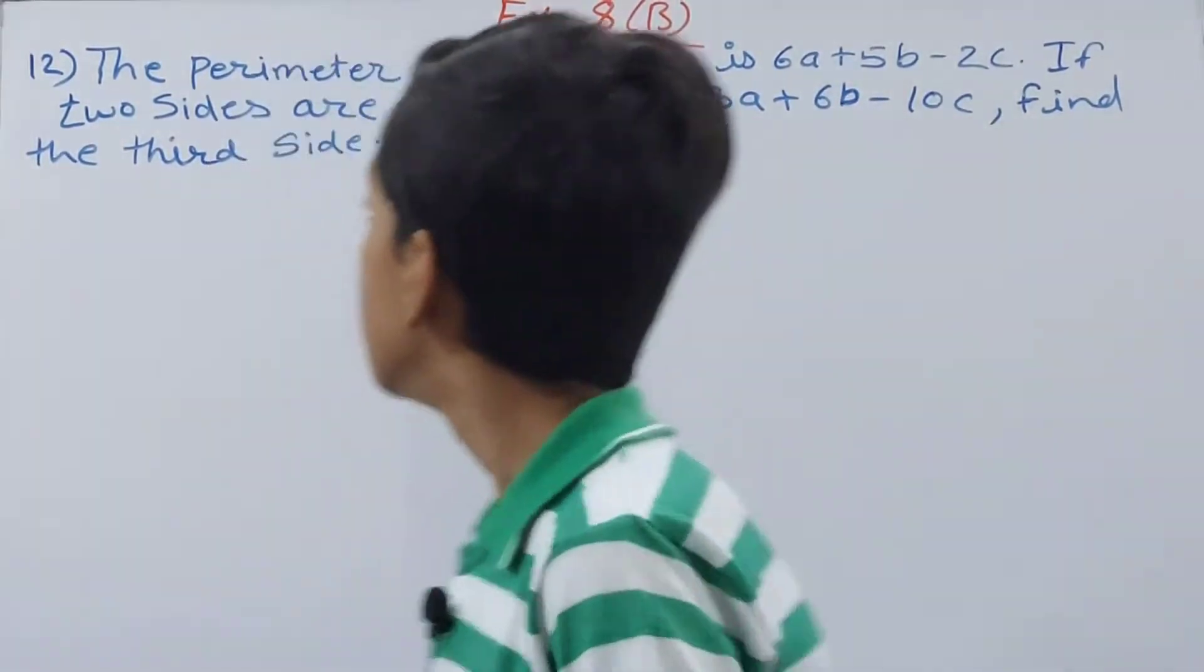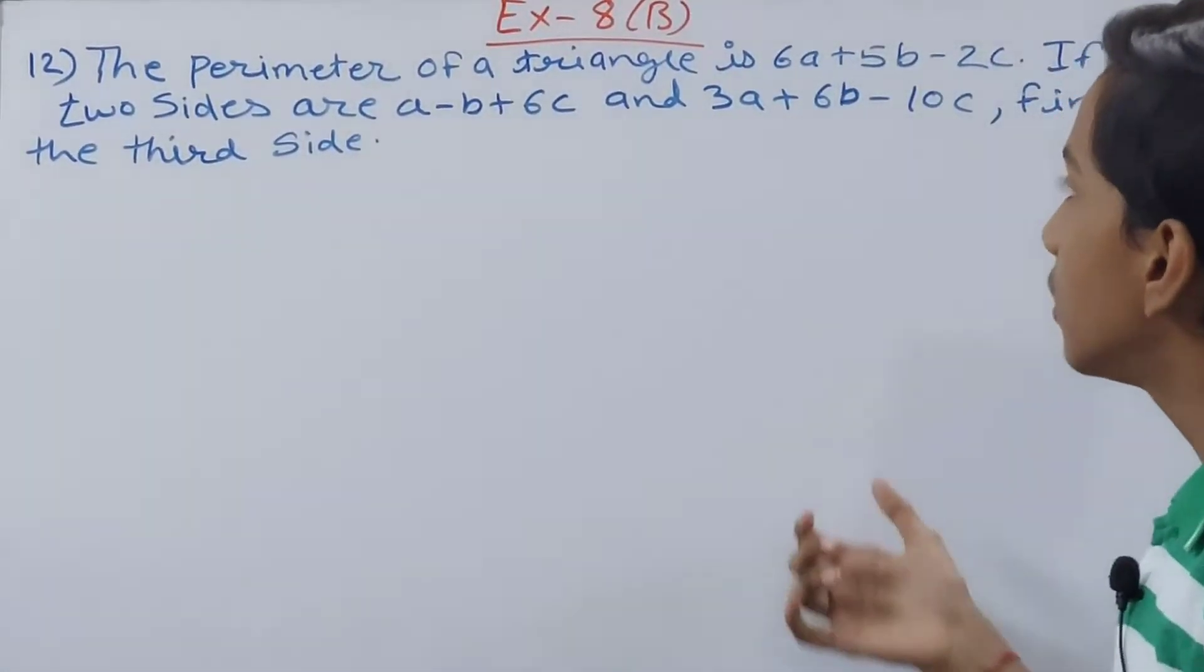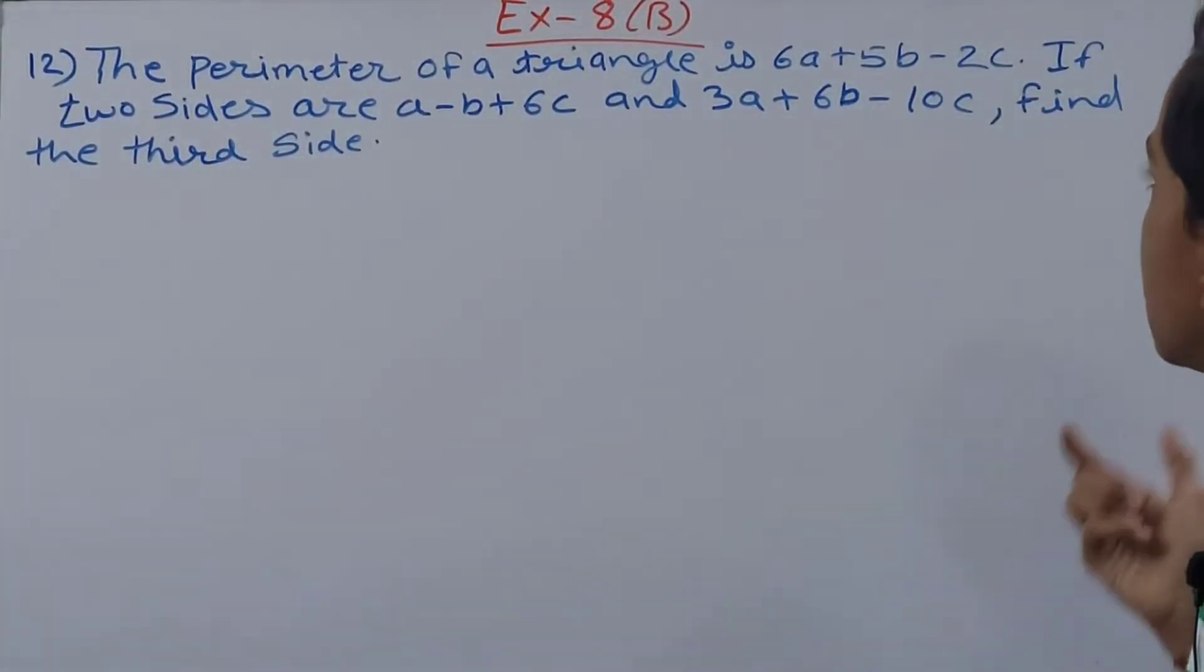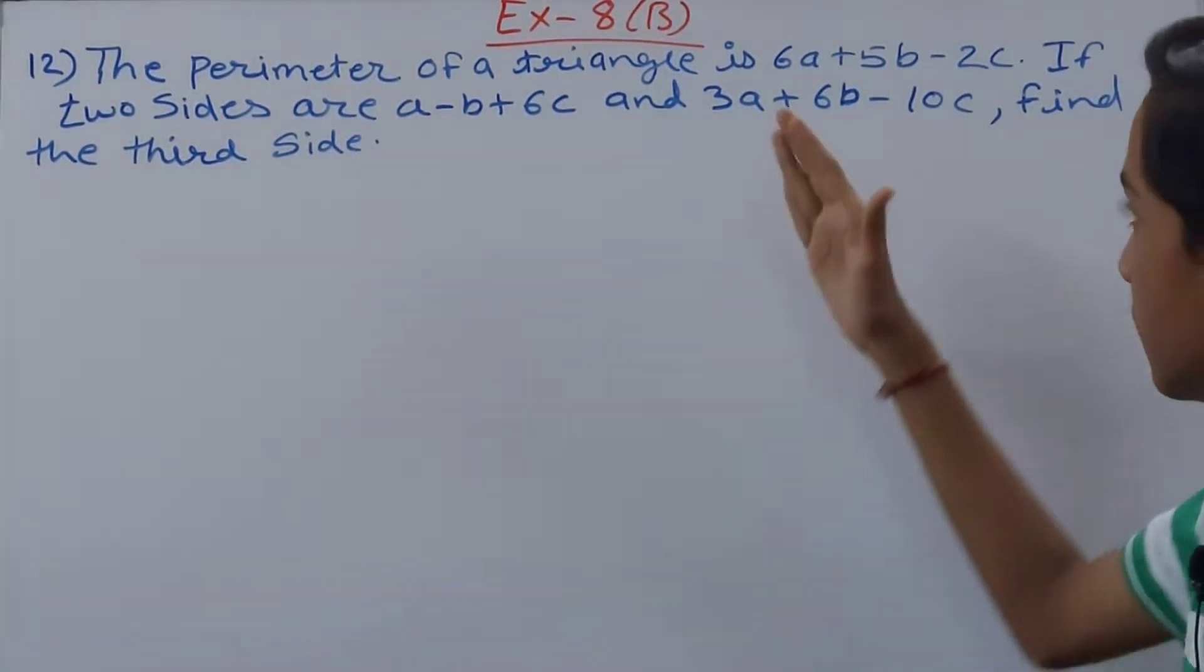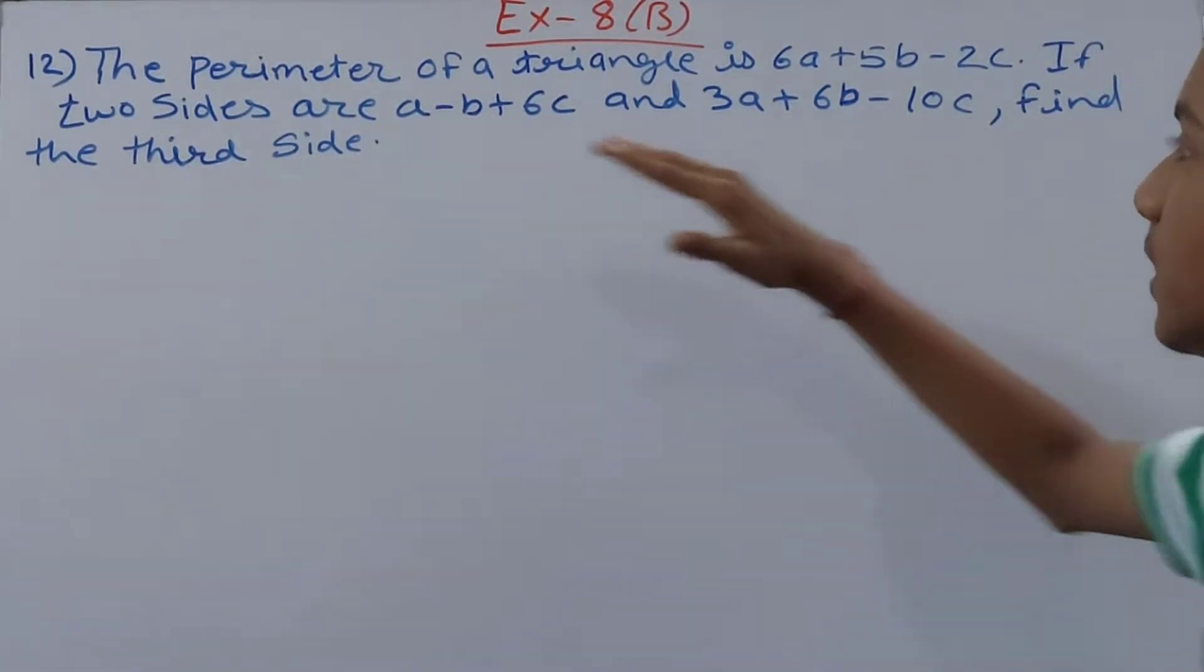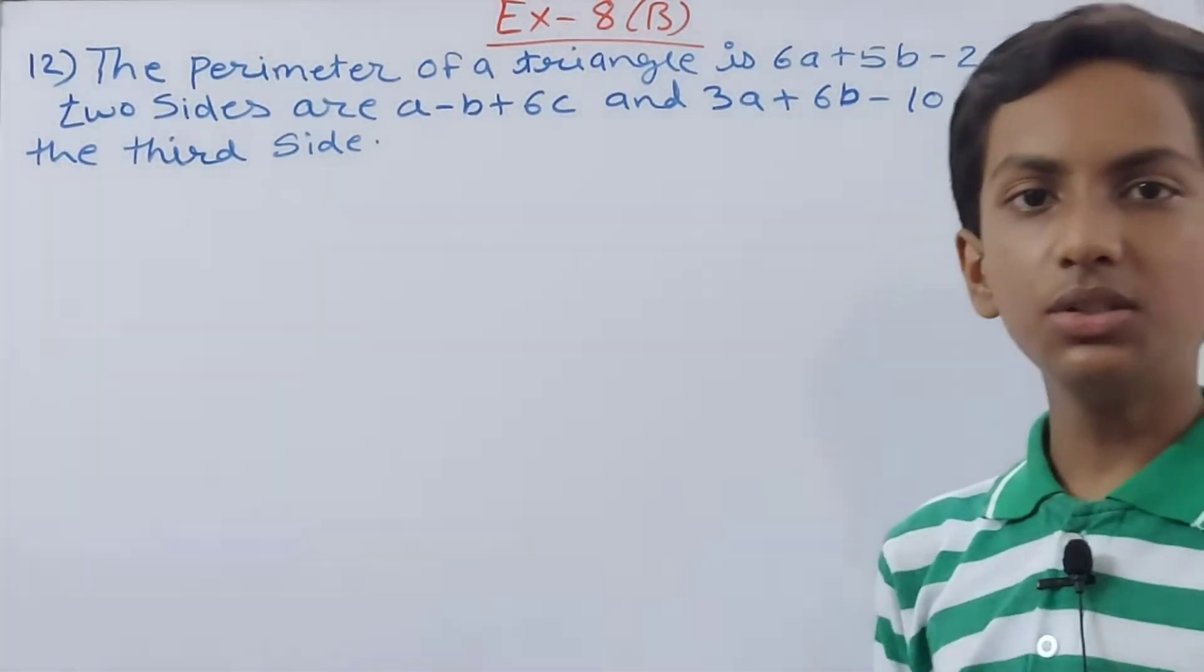Now this question says: The perimeter of a triangle is 6a + 5b - 2c. If two sides are a - b + 6c and 3a + 6b - 10c, find the third side. Here you can see that a triangle is given and its perimeter is also given to us.